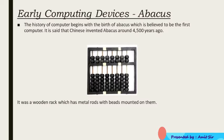It is made up of a wooden rack which has metal rods with beads mounted on them. It has two parts — the upper part is called heaven and the lower part of the abacus is called earth.